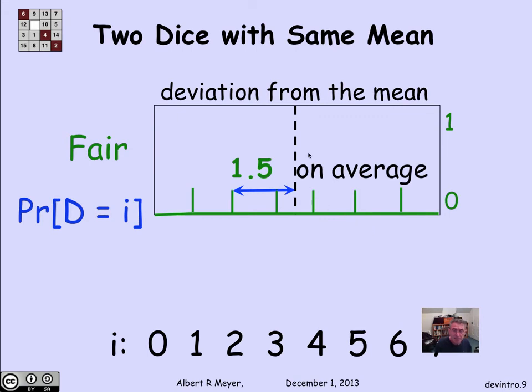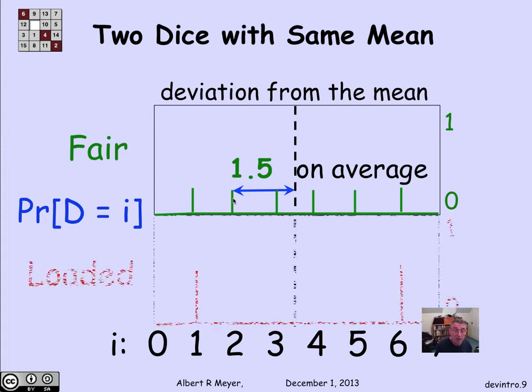Now, the expected value is exactly in the middle at 3 and 1 half. And the average distance of these points, well, you can see that a third of the time you're at distance 1 half. A third of the time, when you take the values 2 and 5, you are at distance exactly 1 and 1 half. And another third of the time, you're at distance 2 and 1 half when you take 1 and 6. And that averages out to 1 and 1 half. So the expected deviation, the expected distance of the fair die from its mean is 1 and 1 half.